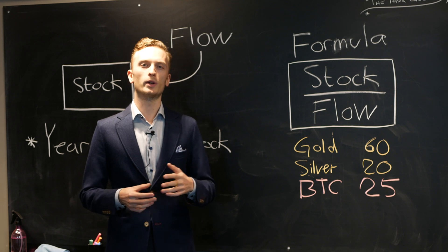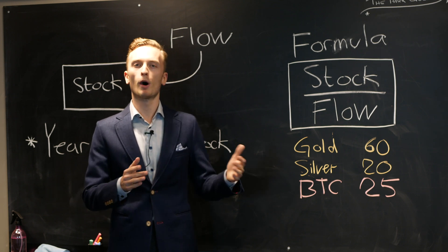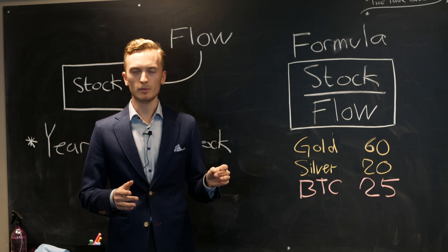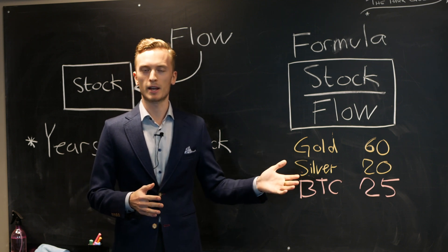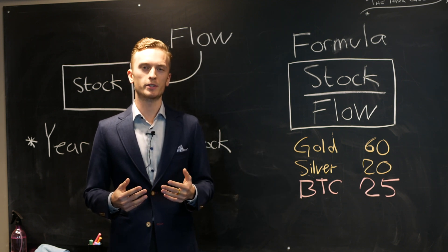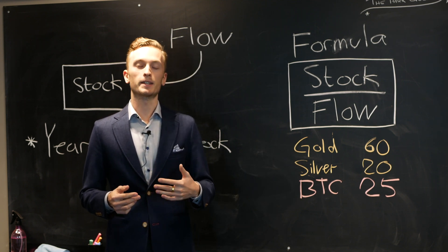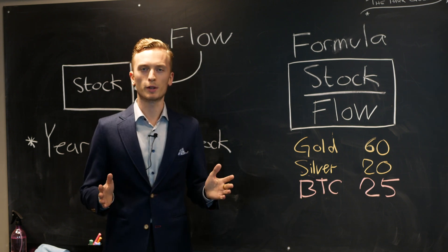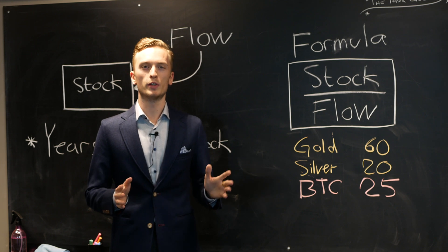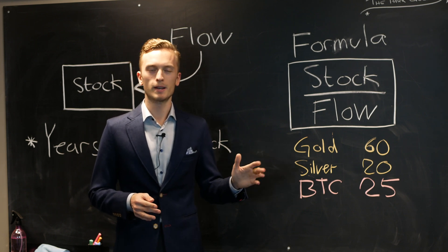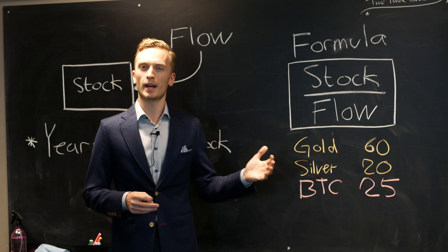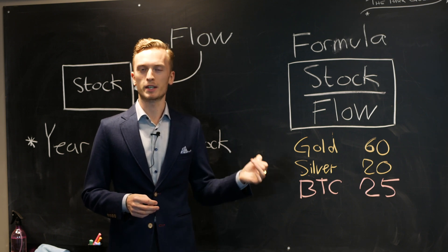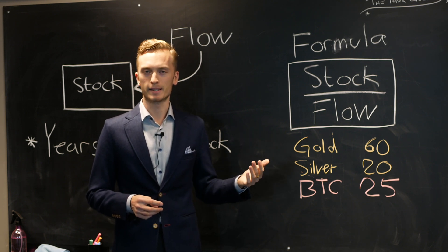This is of course a model where we measure or we model the price of an asset by looking at its scarcity and how can we value scarcity in an asset such as Bitcoin, such as gold and other precious metals. In this video I thought we would go deep into what the stock to flow model actually is, how it works, how we calculate it and what it actually says about the scarcity and the value of an asset.